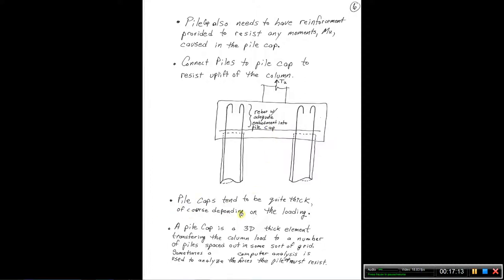As I mentioned, pile caps tend to be quite thick, and it depends on the loading. A pile cap is a 3D thick element transferring the column load to a number of piles spaced out in some sort of grid. Sometimes a computer analysis is used to analyze the forces the pile cap must resist. For the example that I've shown here, it would probably be fairly easy to do all the calculations by hand. But for more complicated piles, there may be a need to use a more sophisticated computer program. In fact, sometimes people may even use a finite element analysis. But that is beyond the scope of this present discussion or introduction for pile caps.